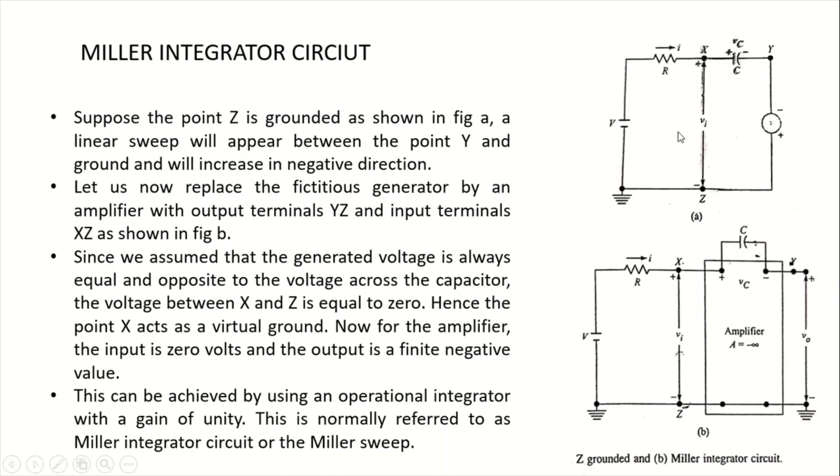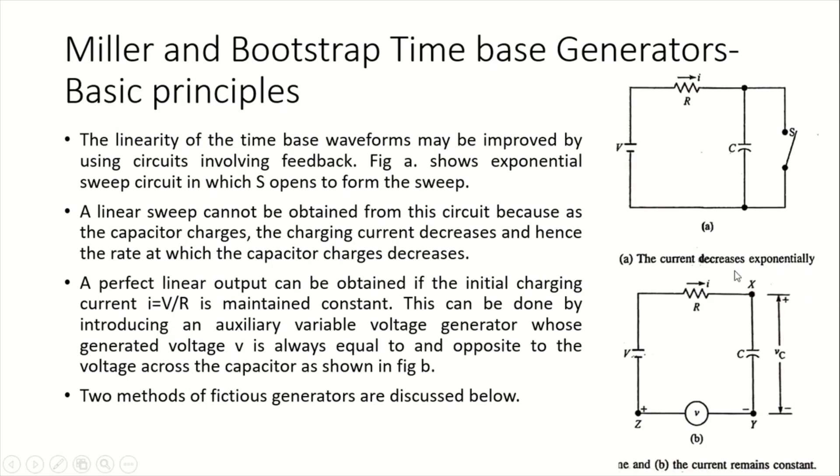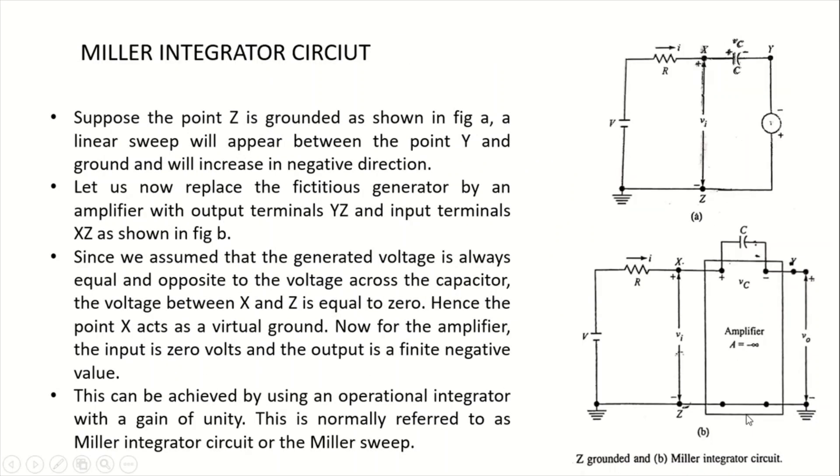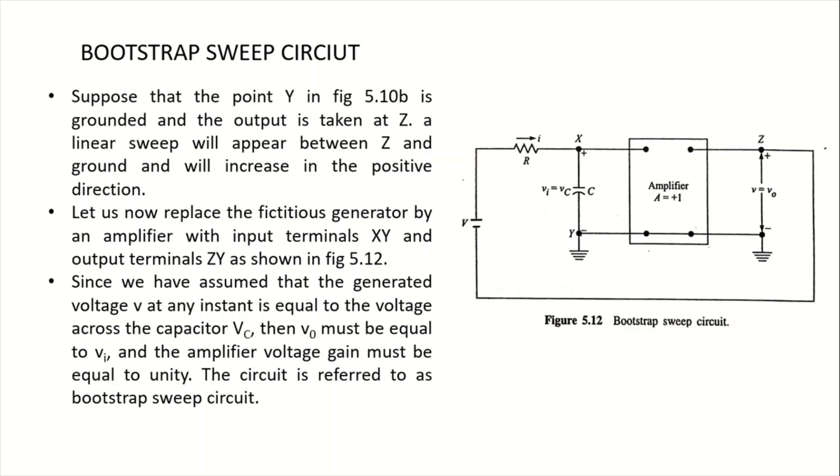For example, if point Y is grounded in this circuit, then the circuit is modified like this. The output will be taken at Z and a linear sweep will appear between Z and ground, increasing in a positive direction. We replace the fictitious generator by an amplifier with input terminals X and Y, and output terminals Z and Y, as shown in this figure.